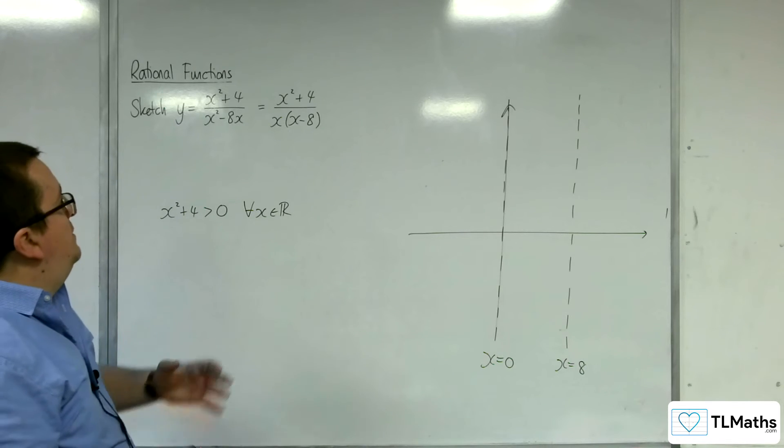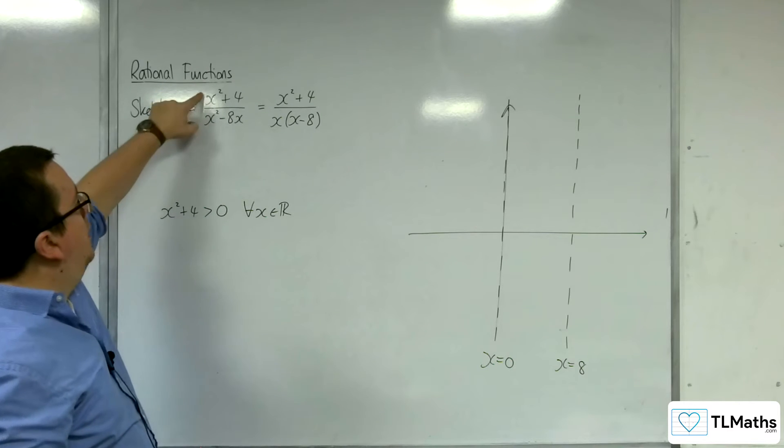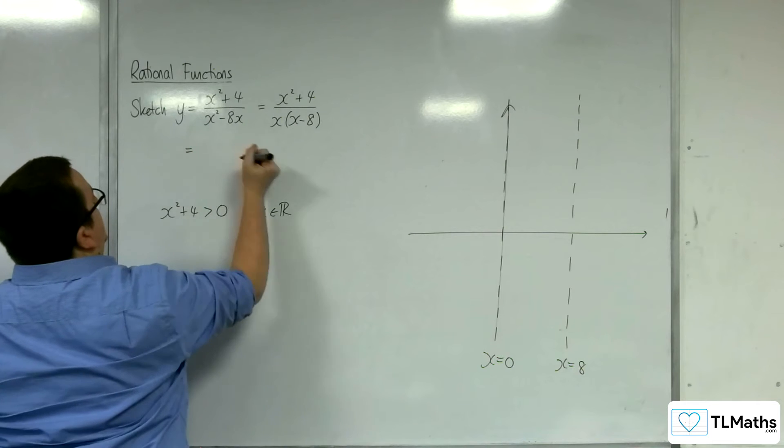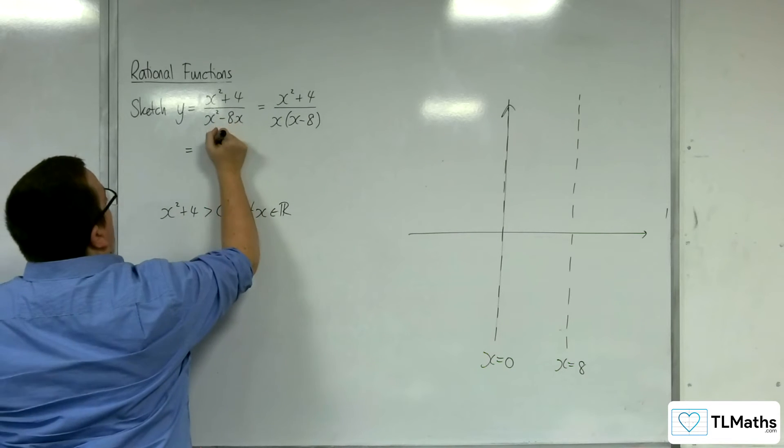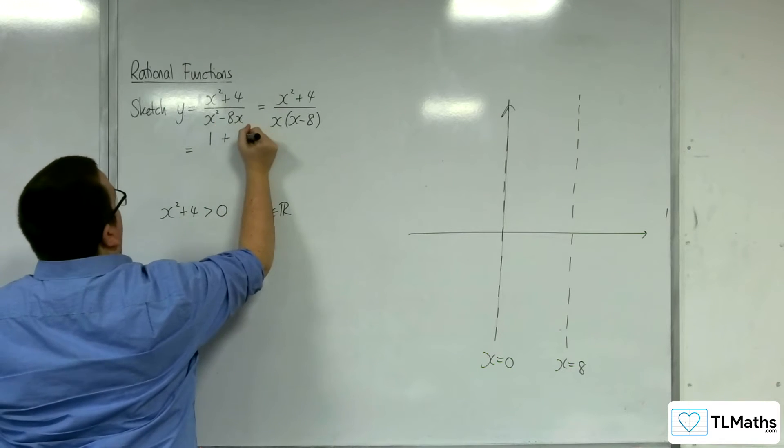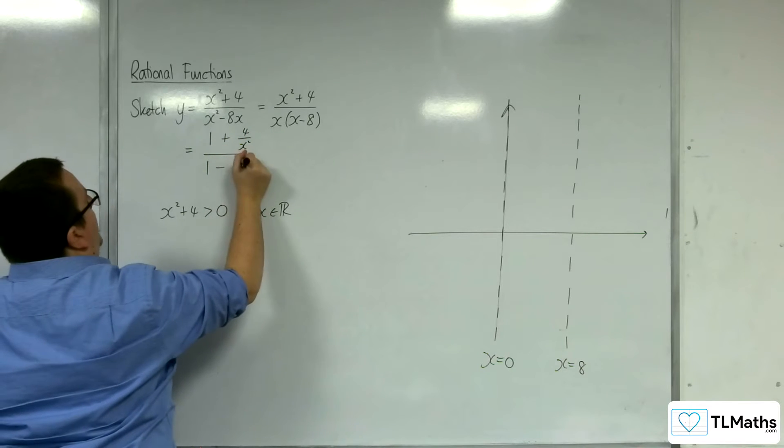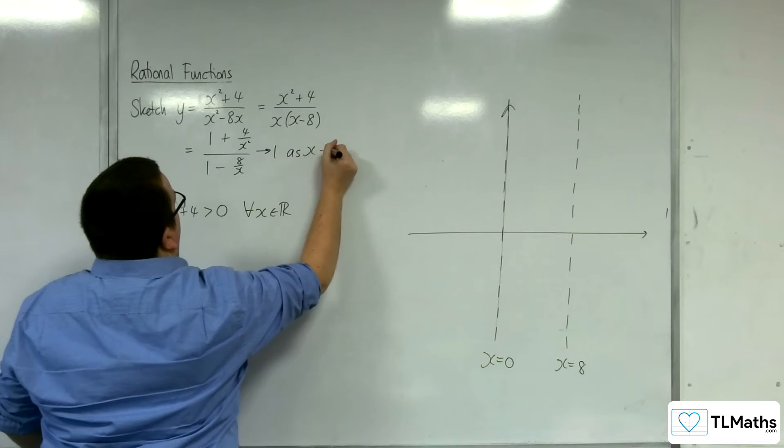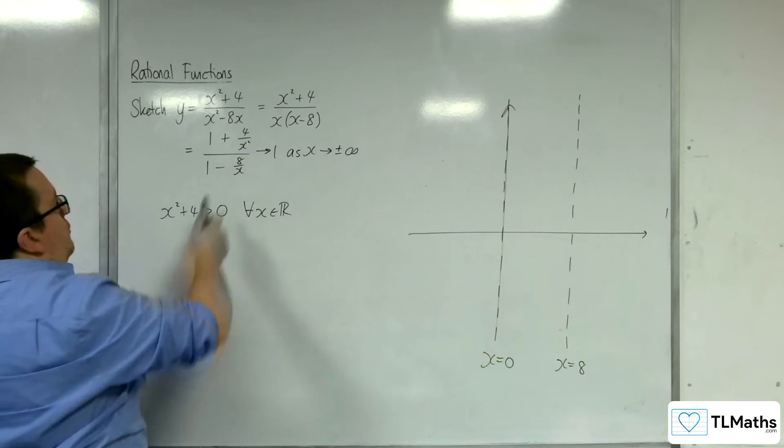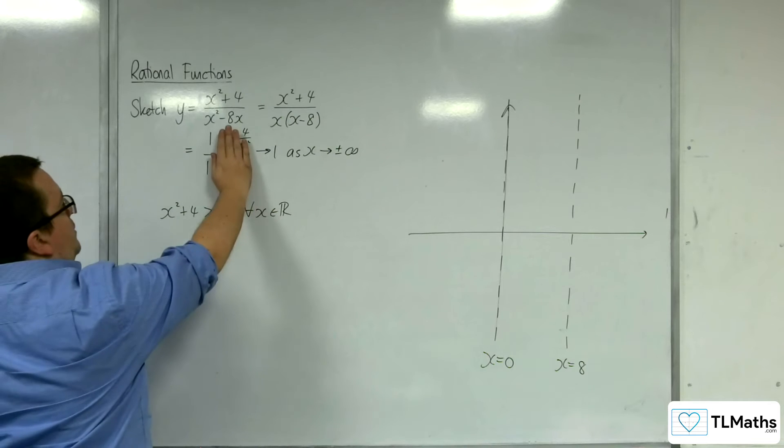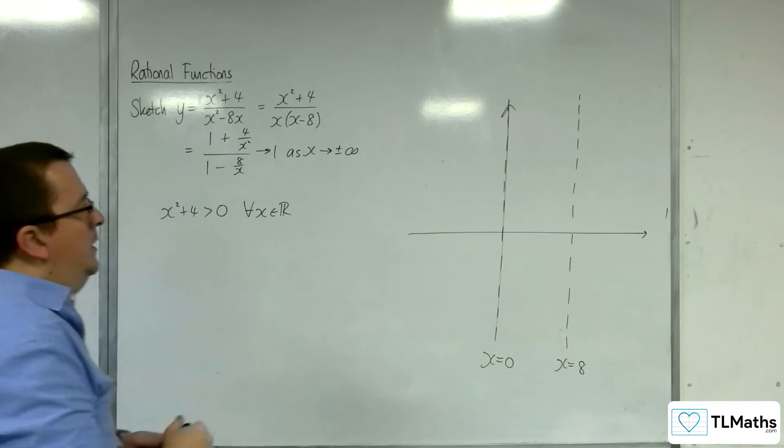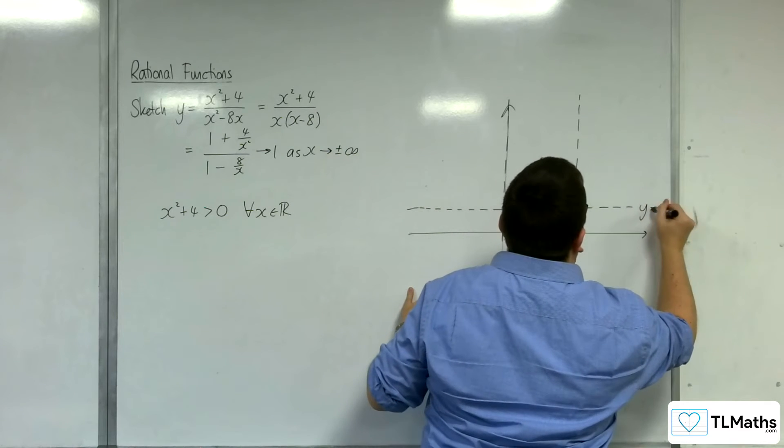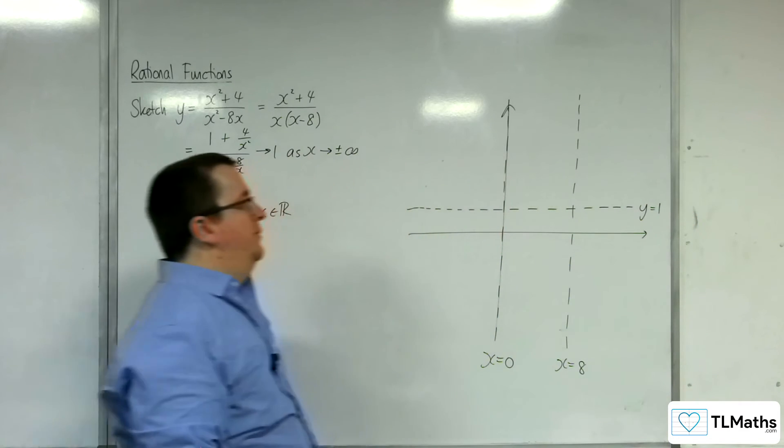How about any horizontal asymptotes? The order on the top and bottom of the polynomial are the same, so there will be a horizontal asymptote. Dividing top and bottom by x², we get (1 + 4/x²)/(1 - 8/x). This tends to 1 as x tends to ±∞, because 4/x² and 8/x tend to 0. So y = 1 is a horizontal asymptote.